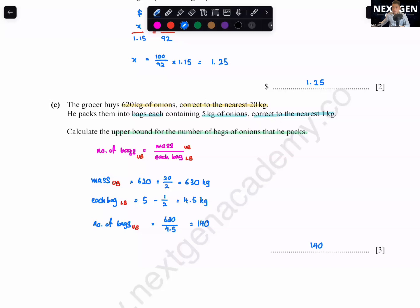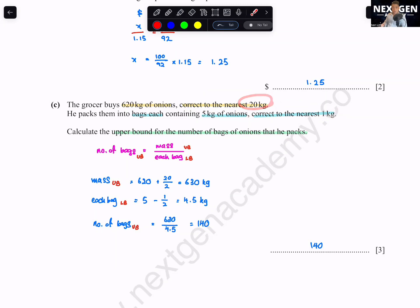The formula is: whenever they say 'correct to whatever,' you plus or minus that value divided by 2. For upper bound you want big over small; for lower bound, small over big. This is the general pattern for Paper 4 Question 1 — typically numbers, percentages, ratios, money — Chapter 1 of your syllabus.